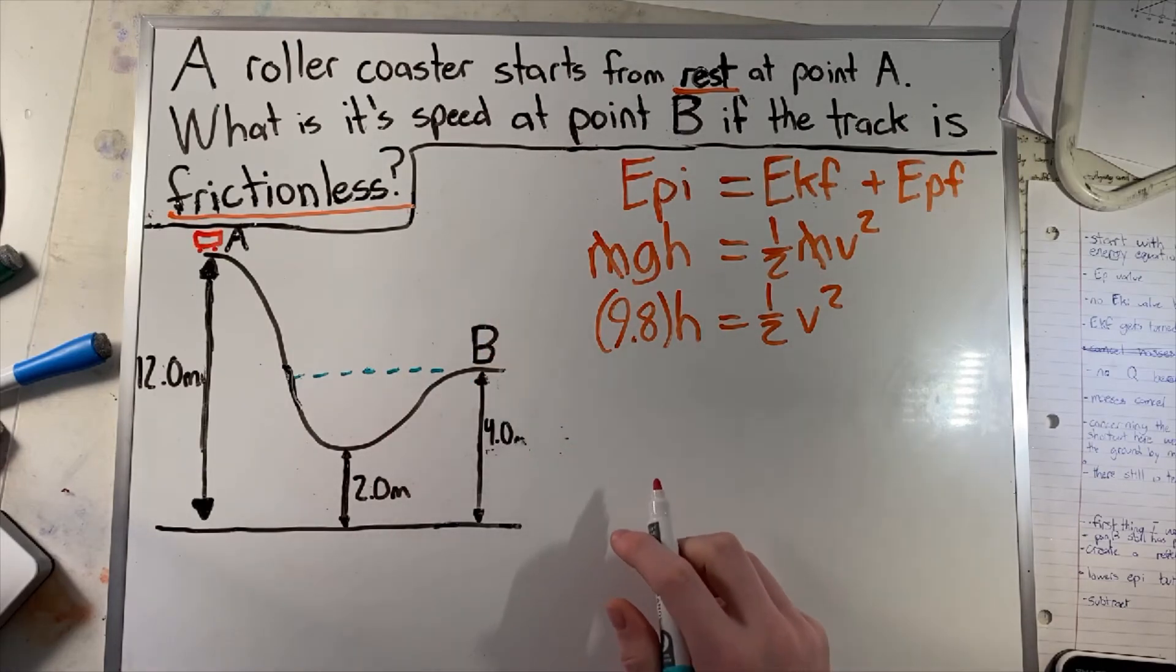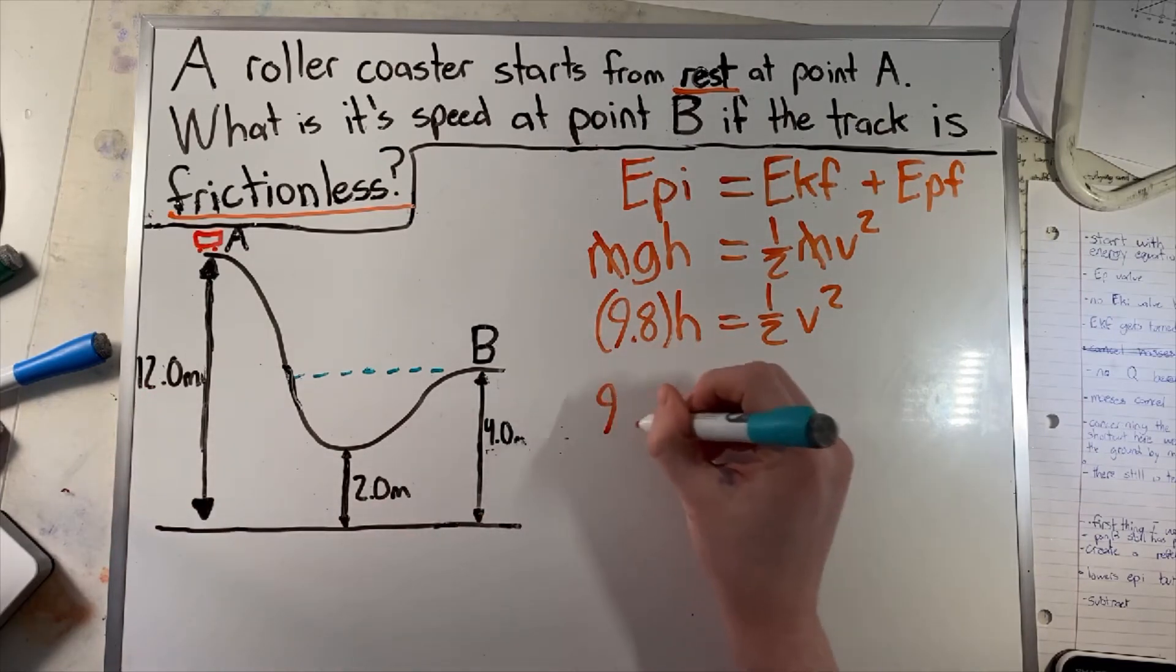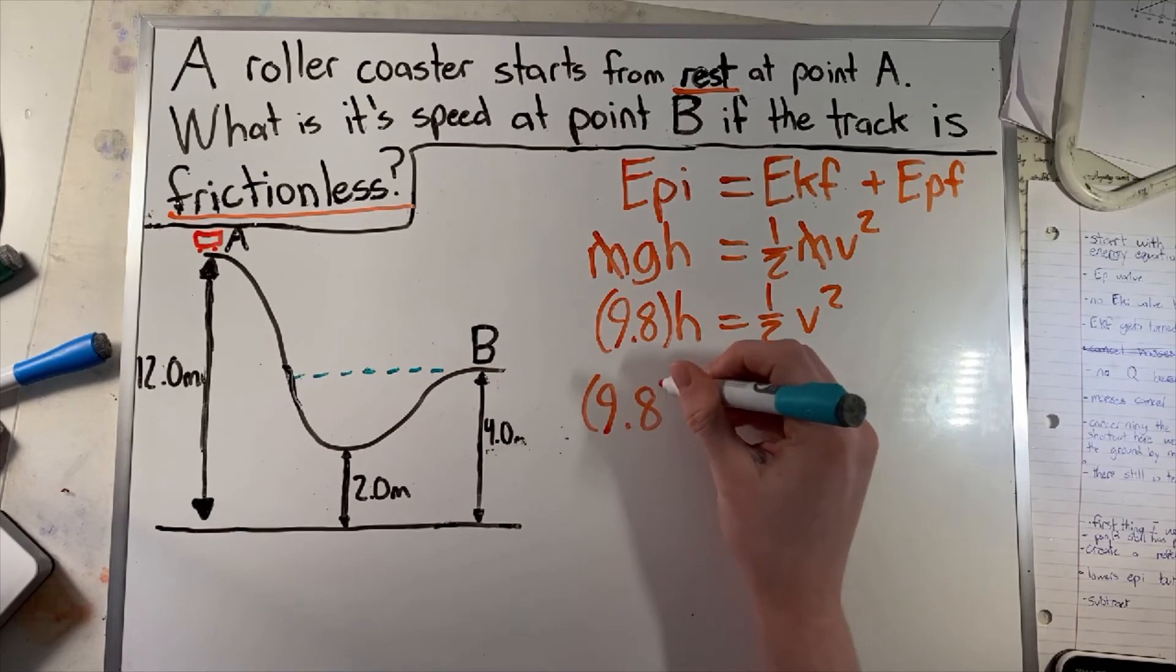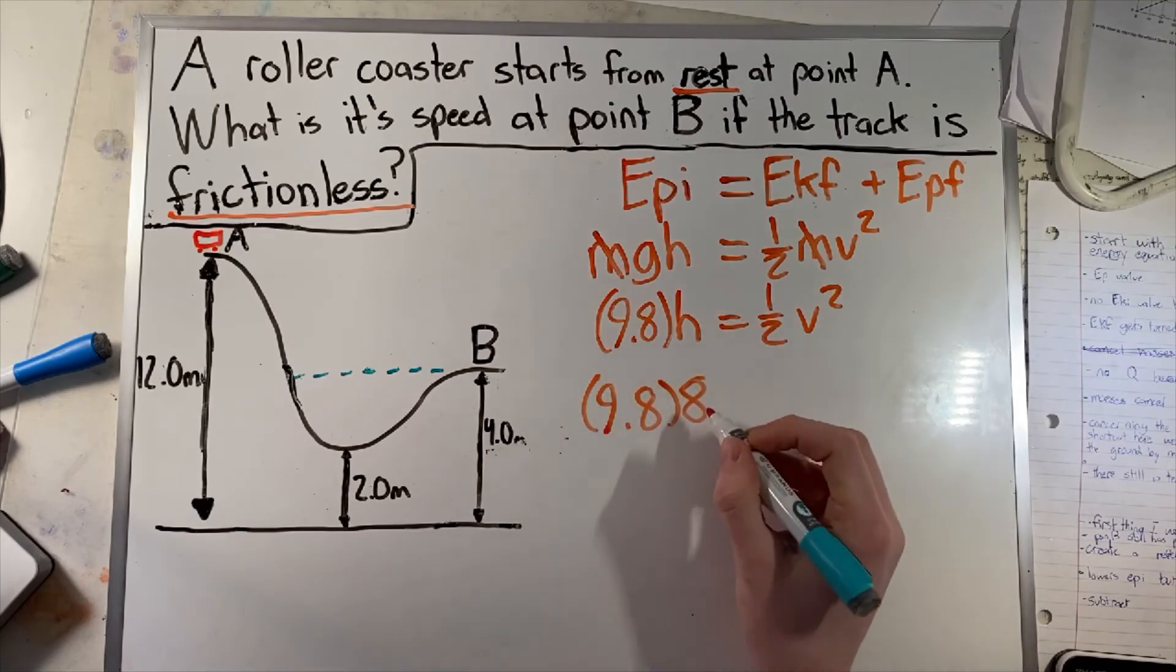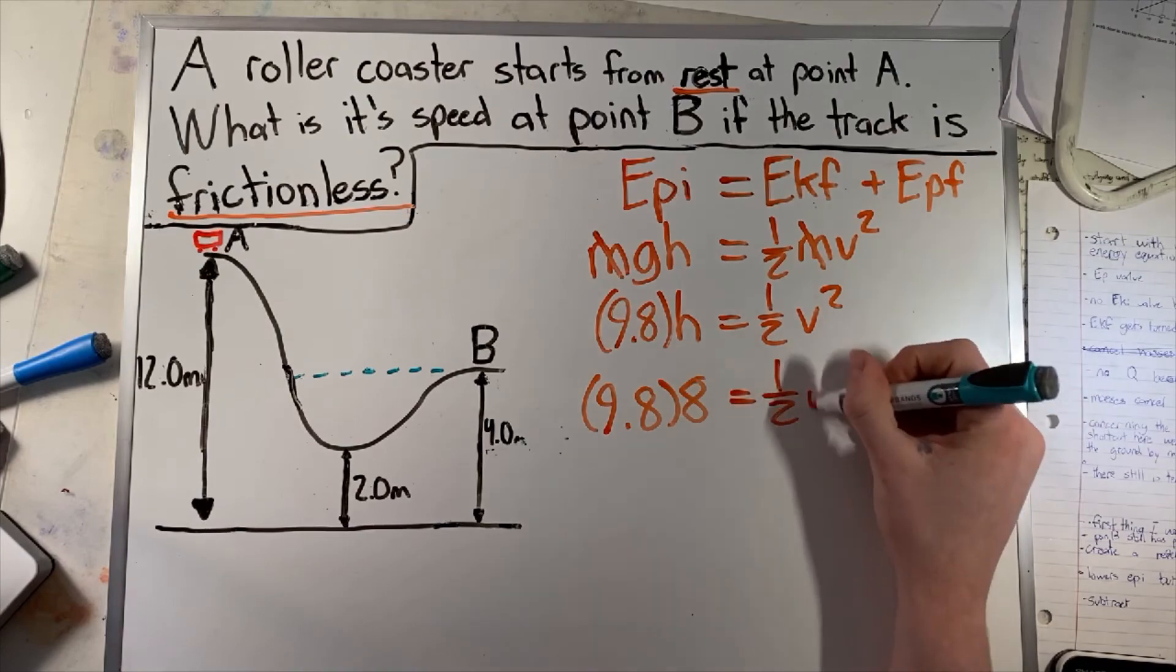So all we have to do is subtract 12 by 4, which gives us 8. So 9.8 times 8, which becomes the height, equals one half velocity squared.